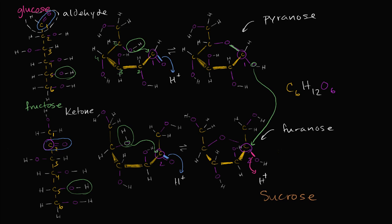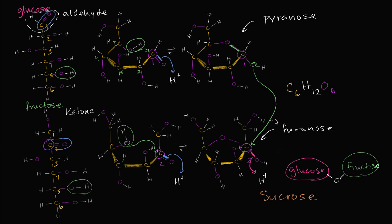So sucrose is formed when glucose forms a glycosidic bond with fructose. To really visualize it properly, you kind of have to flip the fructose over and move it up so they can form a bond between the relevant carbons — the number one carbon of glucose and the number two carbon of fructose — yielding the disaccharide sucrose.